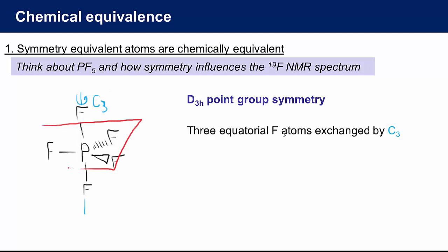While a different symmetry operation such as the mirror plane labelled M interchanges the pair of fluorine atoms that are aligned along the C3 axis. These two axial fluorine atoms are also in identical environments and must be chemically equivalent. There are no symmetry elements of the point group D3H that allow exchange of axial and equatorial fluorine atoms. So these two groups of atoms are distinct.